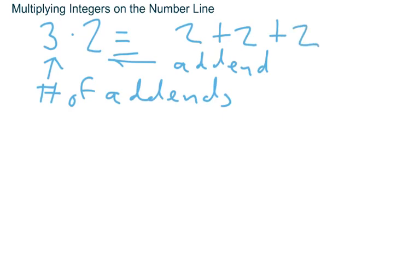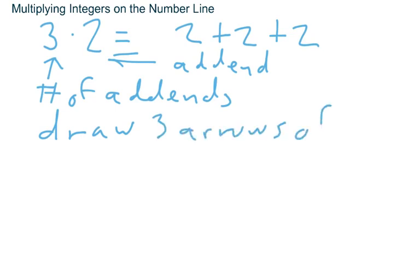If I were going to illustrate that on a number line, I usually represent numbers with arrows. My add-ins would be arrows, and the first number would tell me how many arrows to draw. So to illustrate three times two, I would need to draw three arrows of length two.